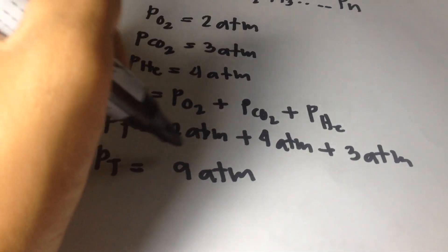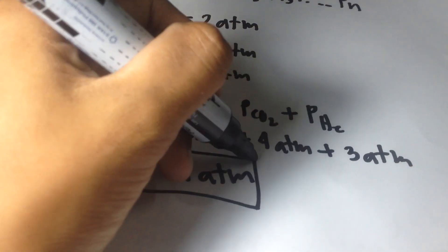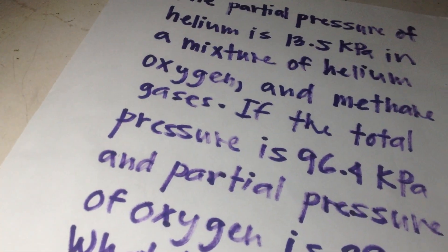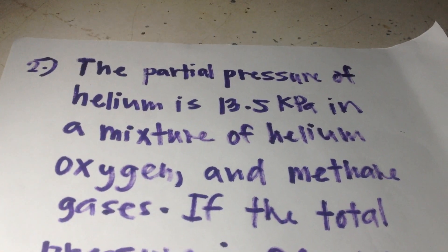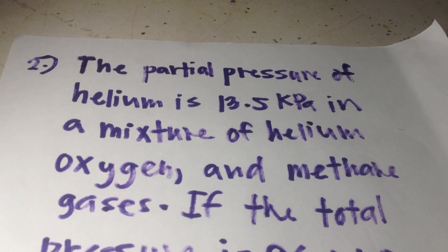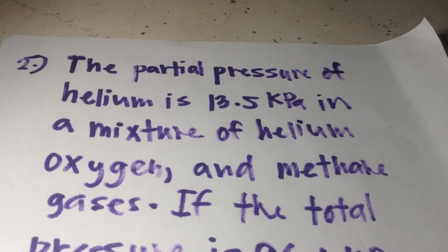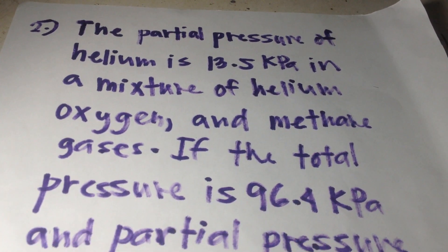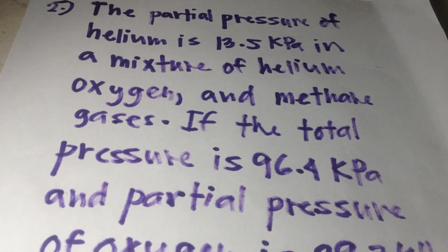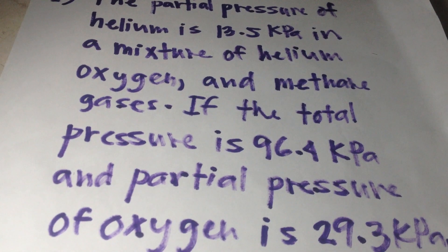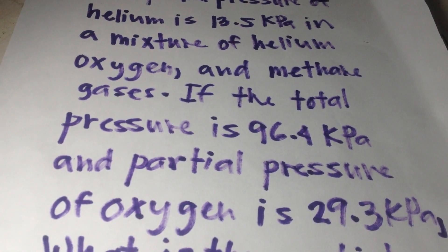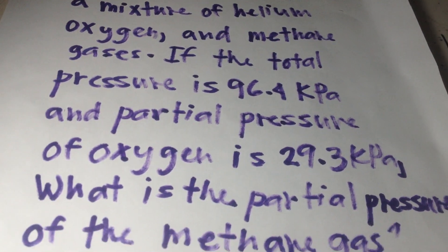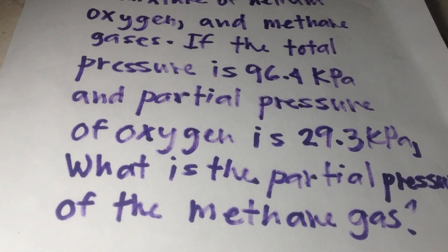So that is the final answer. How about problem number 2? The partial pressure of helium is 13.5 kPa in a mixture of helium, oxygen, and methane gases. If the total pressure is 96.4 kPa and the partial pressure of oxygen is 29.3 kPa, what is the partial pressure of the methane gas?